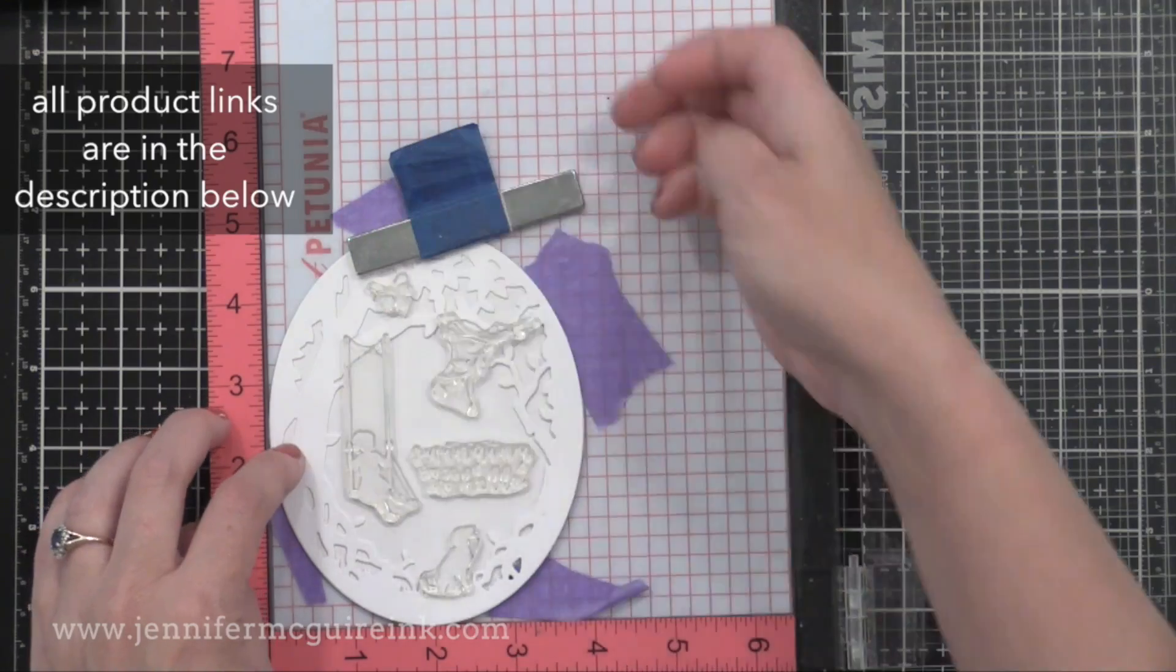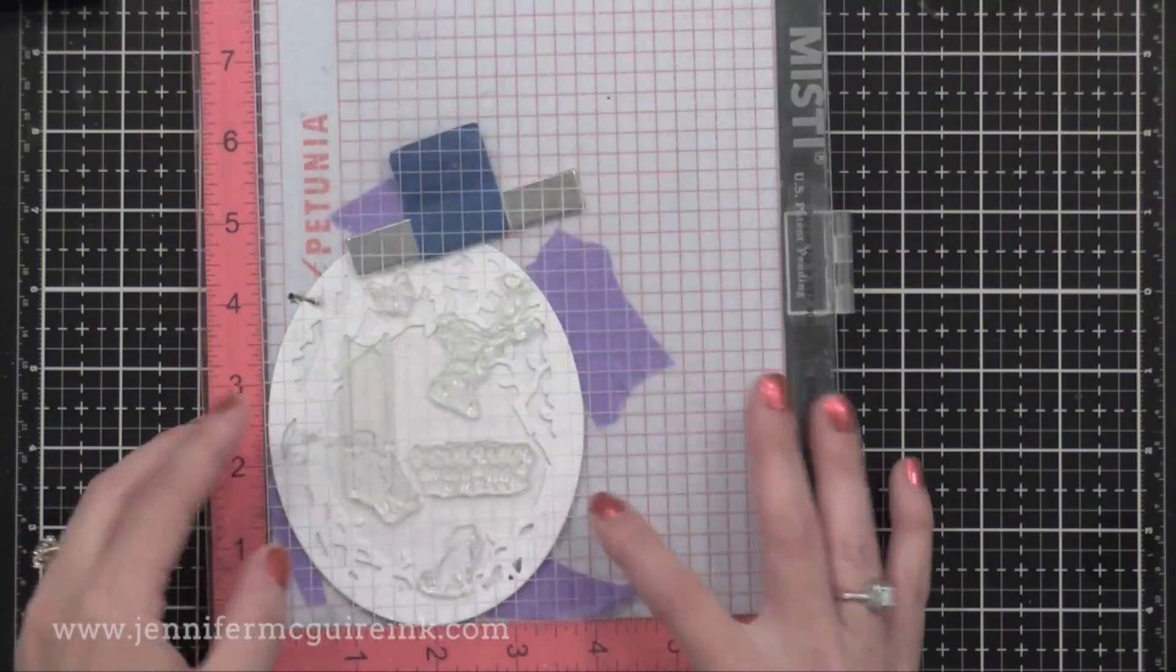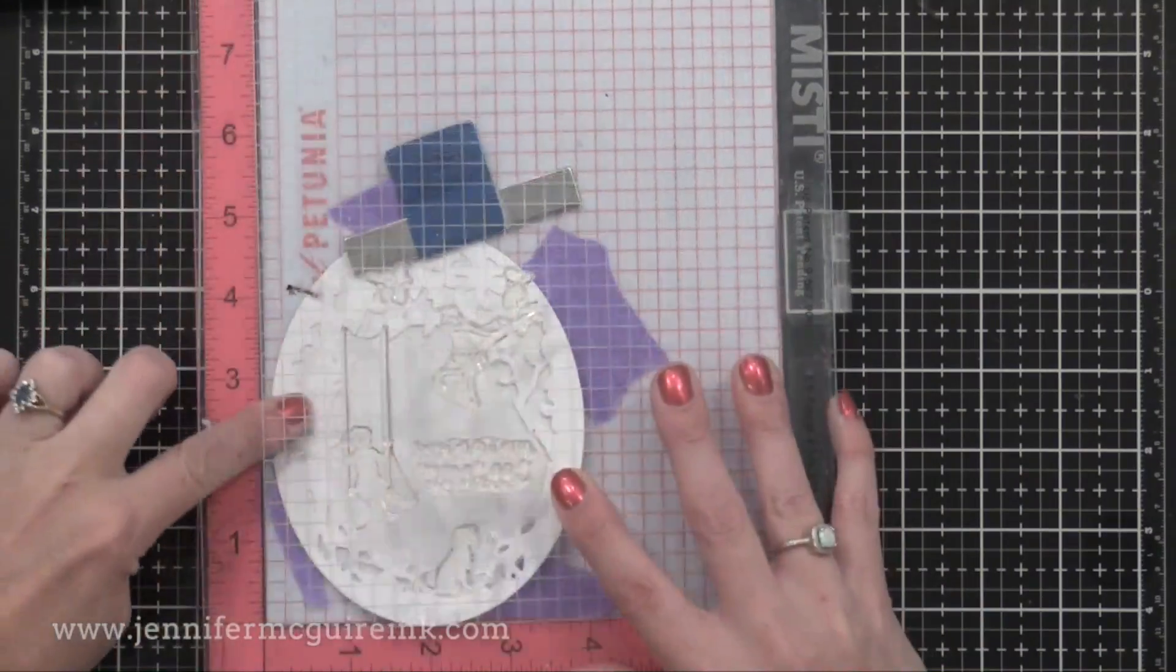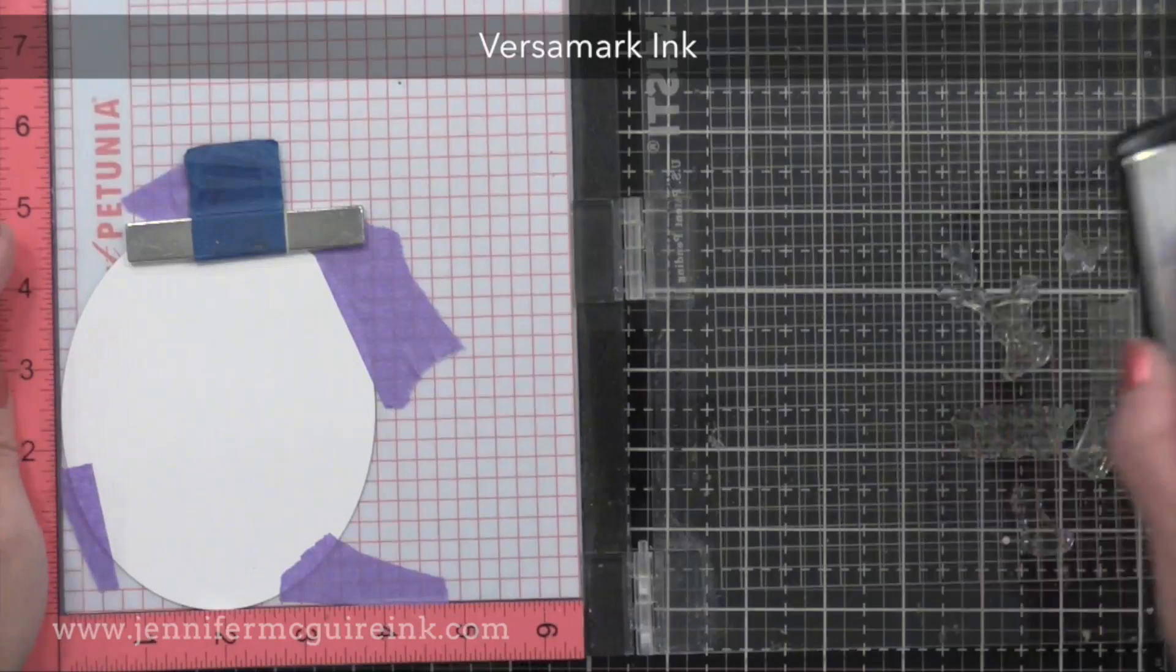I'm positioning the little girl on the swing, a sentiment, a dog image and leaves from that Monthly Hero kit. Transferring it onto the door of my Misti, removing the frame and now it's time to stamp.